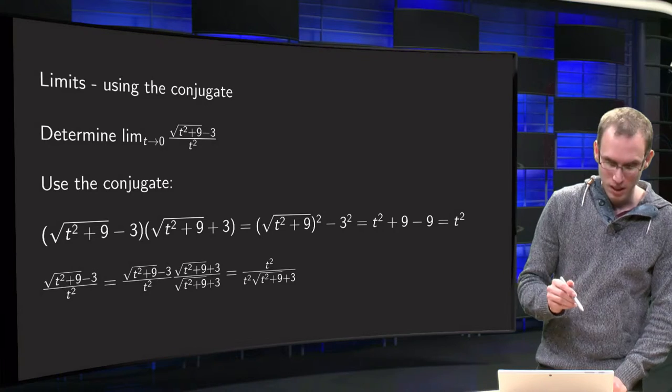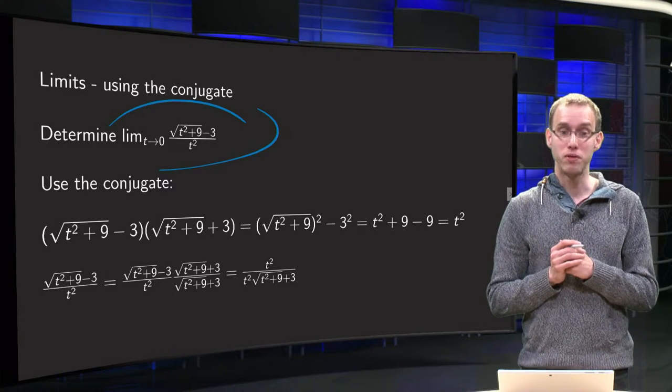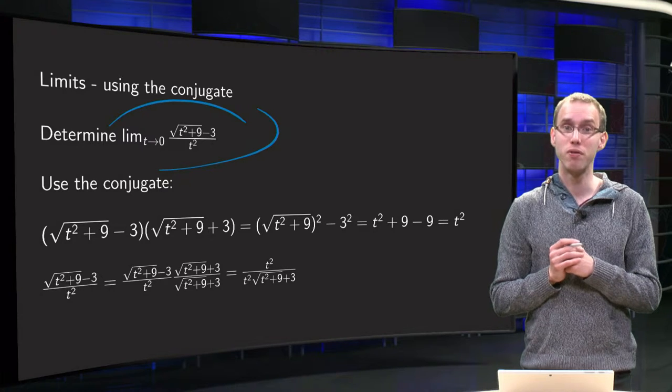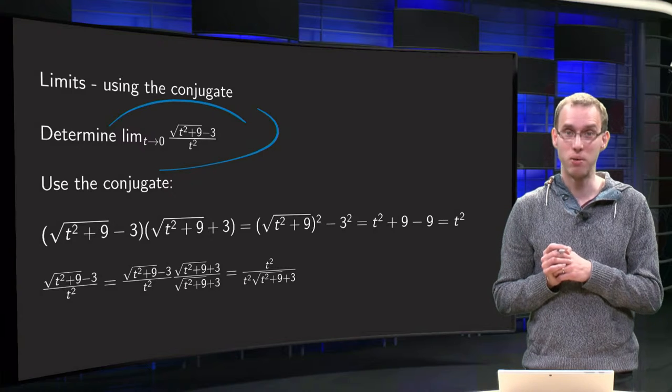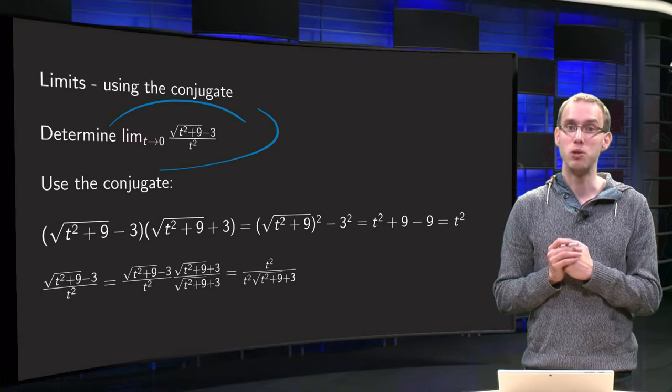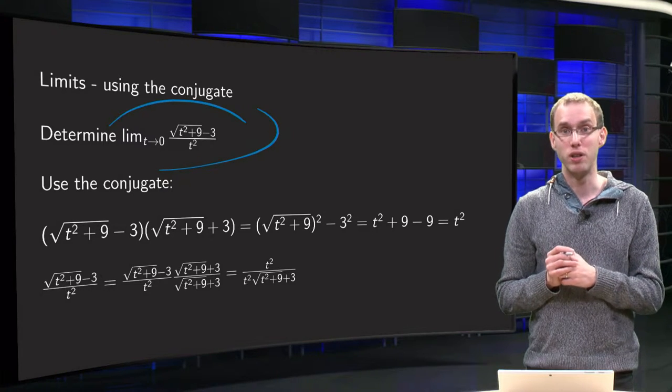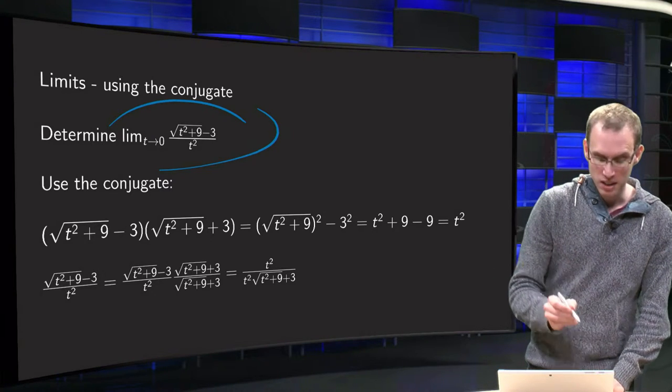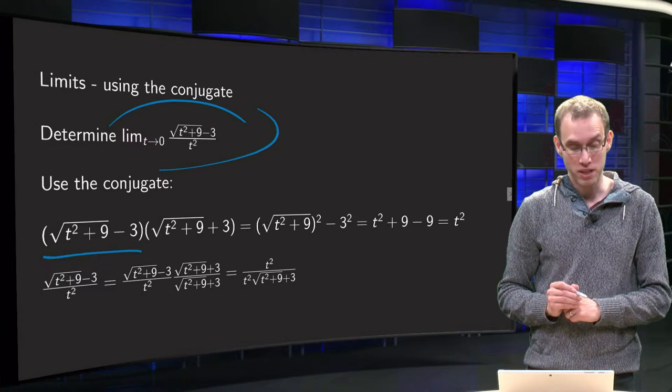First of all, we have this horrible looking limit over here: square root of t squared plus 9 minus 3, all over t squared. Plugging in t equals zero directly gives you zero over zero. So what are we going to do? We will use what is called the conjugate of the numerator. What is that?